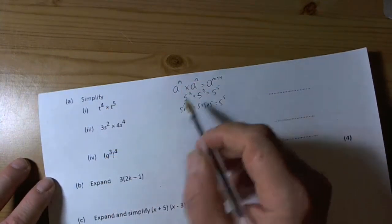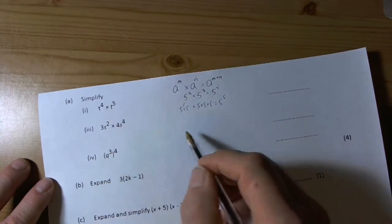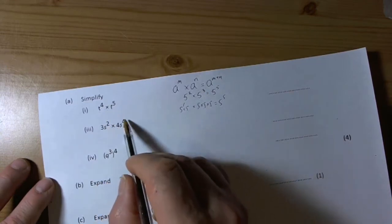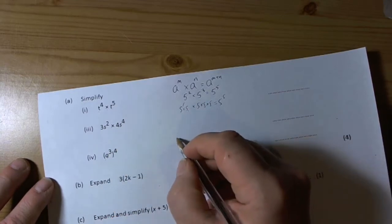So that's the rule we'd be using here. We've got a times going on with the same base of t. Here we've got the same base again when we're timesing. Here though we've got something slightly different.